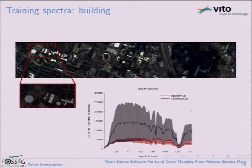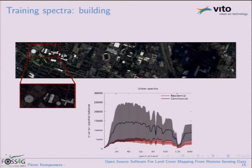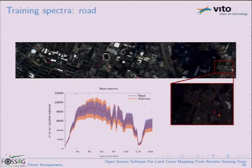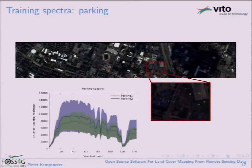Even more difficult were the buildings, which represent a land-use difference. Houses built for residential areas are very similar to buildings used for commercial areas, with a large spectral variation and significant overlap. Even worse for roads and highways — they are made of exactly the same material, so there's complete spectral overlap in the training pixels. Similarly, occupied and free parking lots show total spectral overlap.